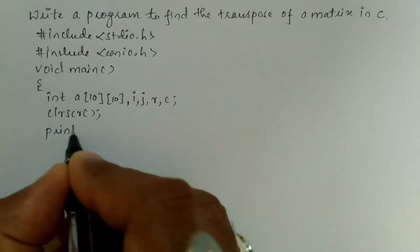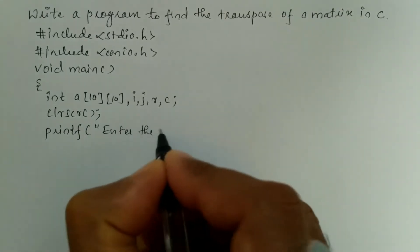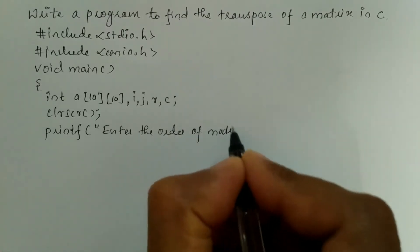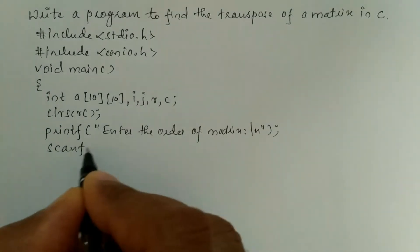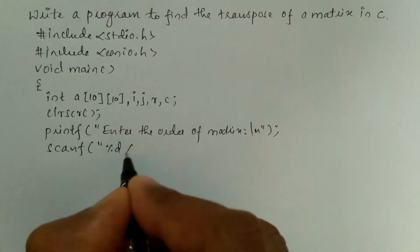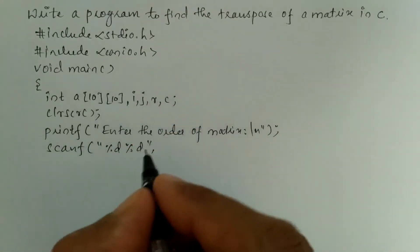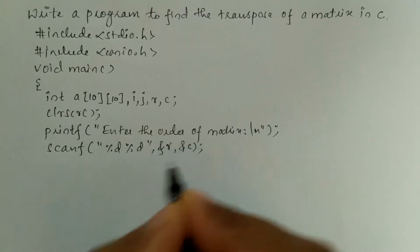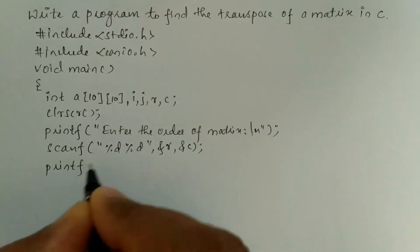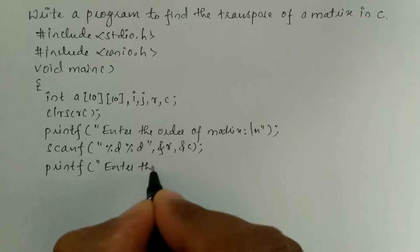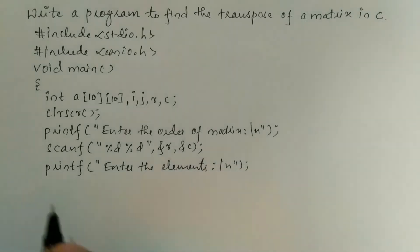Now we will ask the user to enter the order of the matrix using a printf function. In double quotation marks I'll write "Enter the order of matrix\n" and put a semicolon. Now let us write the scanf statement to receive the value from the user through the keyboard: %d and %d, and we are going to take row and column — ampersand r, comma ampersand c, and put semicolon. After this, we have to ask the user to enter the elements, so I'm going to write a printf statement: "Enter the elements:\n" and put semicolon.